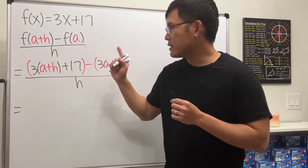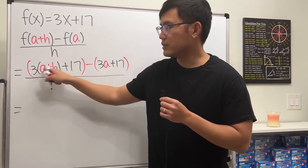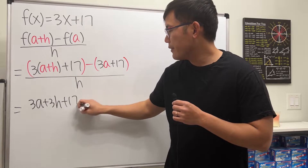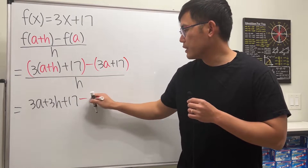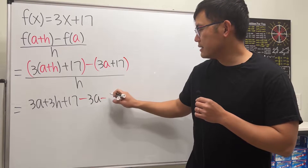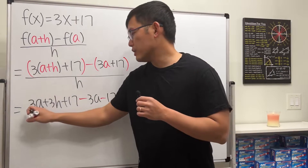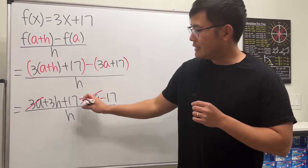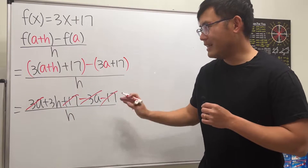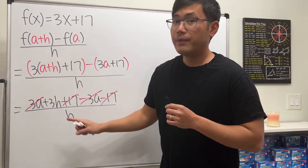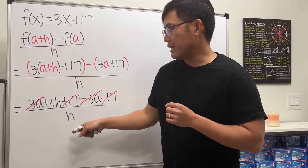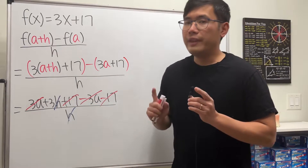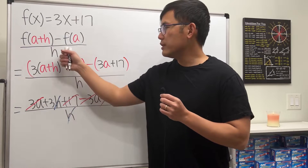Now we simplify. Distribute the 3 to get 3a + 3h + 17, then distribute the negative to get −3a − 17, all divided by h. We see 3a and −3a cancel, 17 and −17 cancel, and we're left with 3h over h. We can cancel the h's.